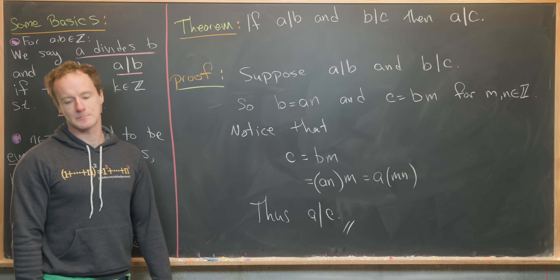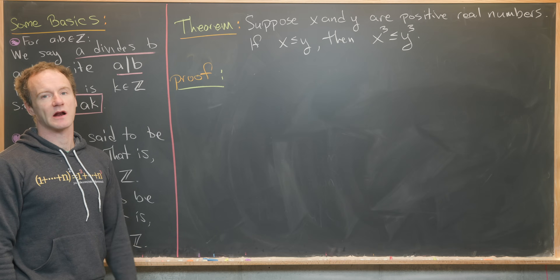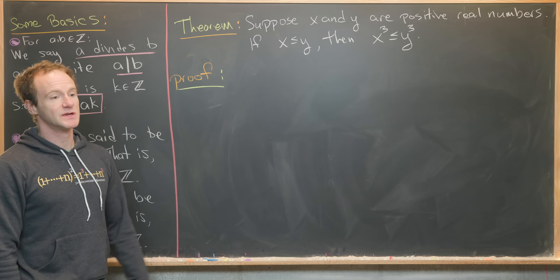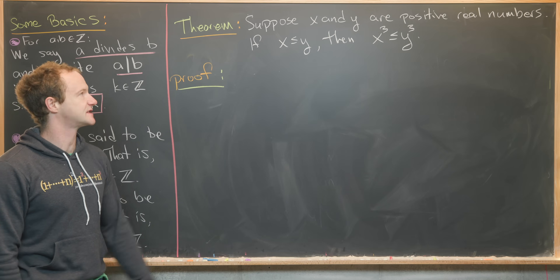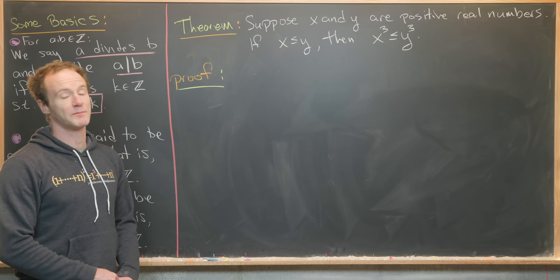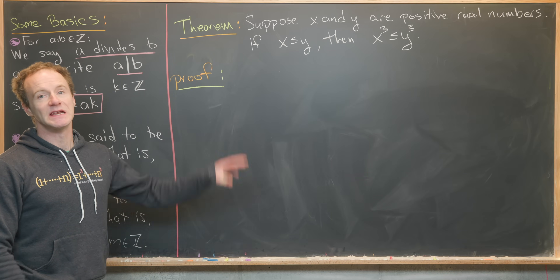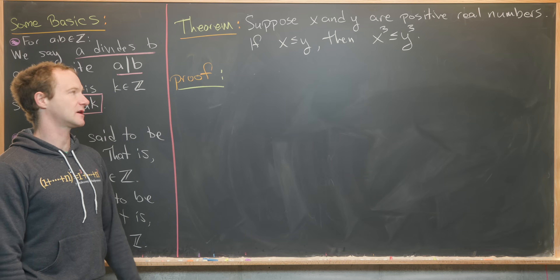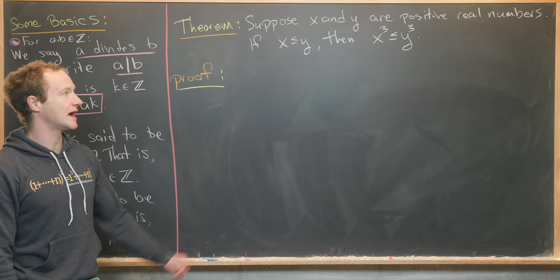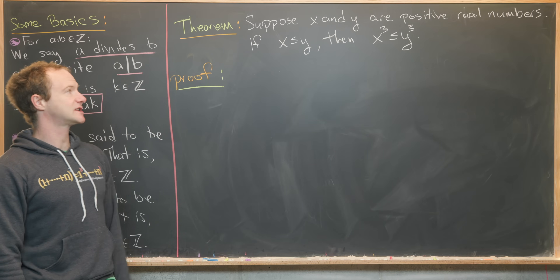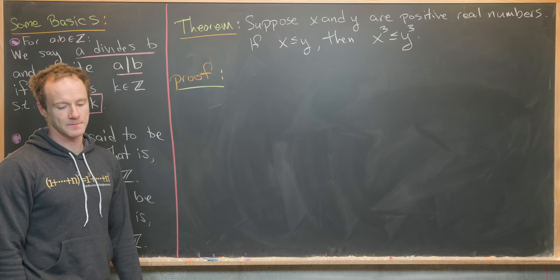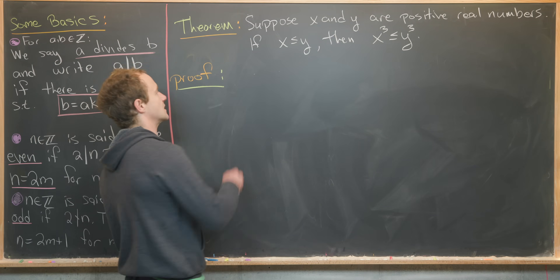For our last result, we have a setup: suppose x and y are positive real numbers. The conditional statement is: if x is less than or equal to y, then x cubed is less than or equal to y cubed. Let's suppose x is less than or equal to y — that's supposing P is true — and decode this into something easier to do arithmetic with.